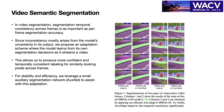Since inconsistency almost arises from the model's uncertainty in its output, we propose an adaptation scheme where the model learns from its own segmentation decisions as it scans through the video. Through this update, we can produce more confident and temporally consistent labeling for similarly-looking pixels across frames.